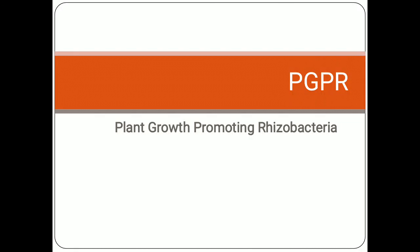Hello all. Let us study today about PGPR, that is Plant Growth Promoting Rhizobacteria. Before we get into the topic, let me briefly tell you about the rhizosphere. The rhizosphere is a region of soil found around the roots of plants. This region has a very high microbial load and is influenced by the exudates of the roots. Organisms present in the rhizosphere include bacteria, fungi, and even some viruses. The root exudates affect the rhizosphere flora, and the rhizosphere flora in turn affect the plant they are associated with.